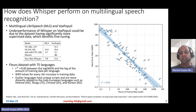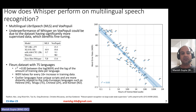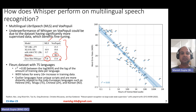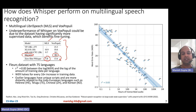How does Whisper perform on multilingual speech recognition? It was evaluated on two datasets: MLS (Multilingual LibriSpeech) and VoxPopuli. Zero-shot Whisper establishes a new state of the art for MLS. However, on VoxPopuli it is not as strong compared to the best supervised baseline, likely because VoxPopuli has a very large training set that the supervised model exploited.